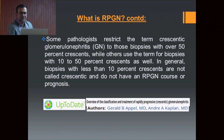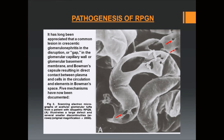Some pathologists restrict crescentic glomerulonephritis to those biopsies with over 50% of crescents, while others use the term for biopsies with 10 to 15% of crescents as well. In general, biopsies with less than 10% crescents are not called crescentic and do not carry any RPGN course or prognosis. A common lesion in crescentic glomerulonephritis is the disruption or gap in the glomerular capillary wall or glomerular basement membrane, resulting in direct contact between plasma cells in circulation and elements in Bowman's space.